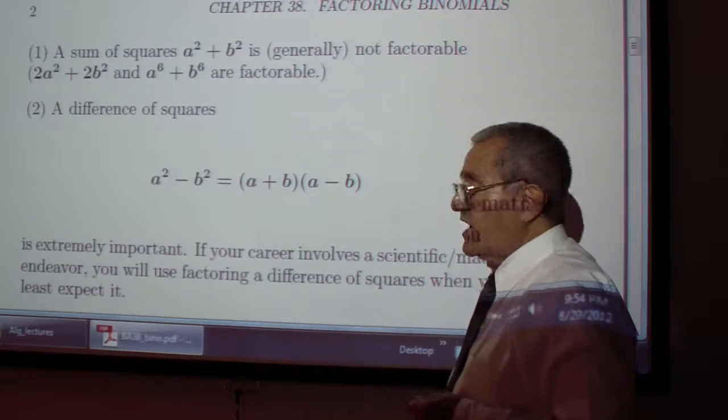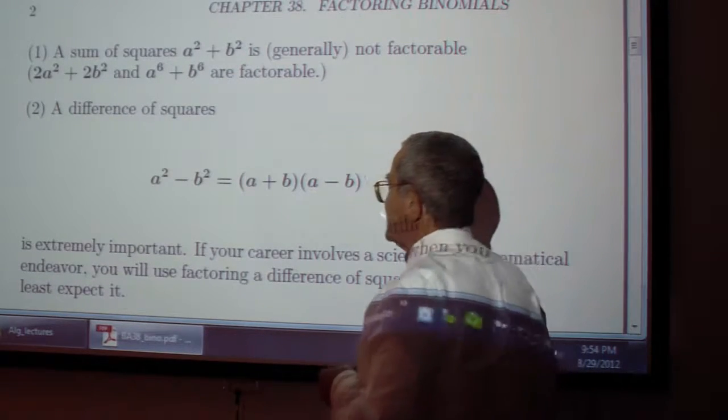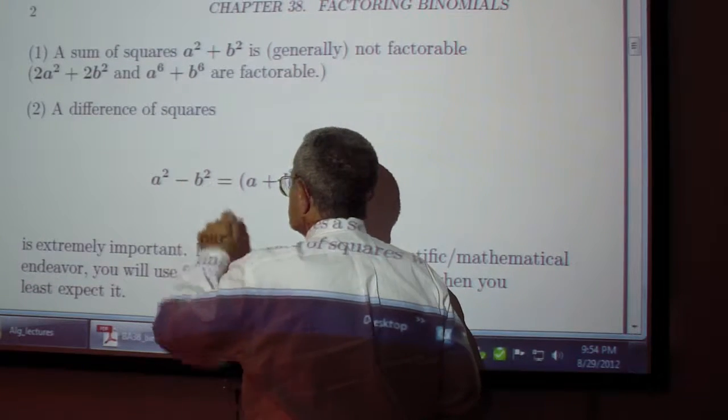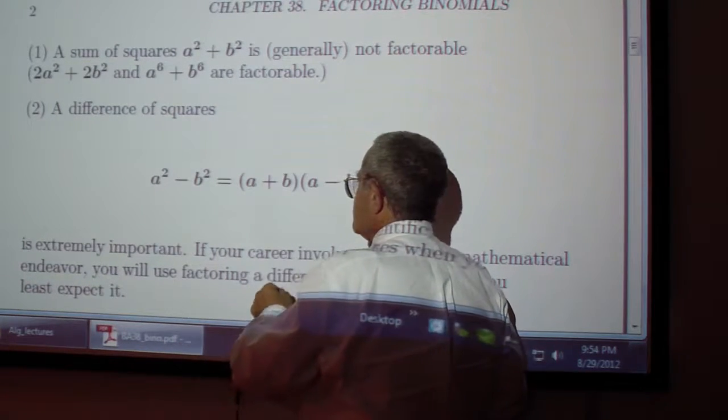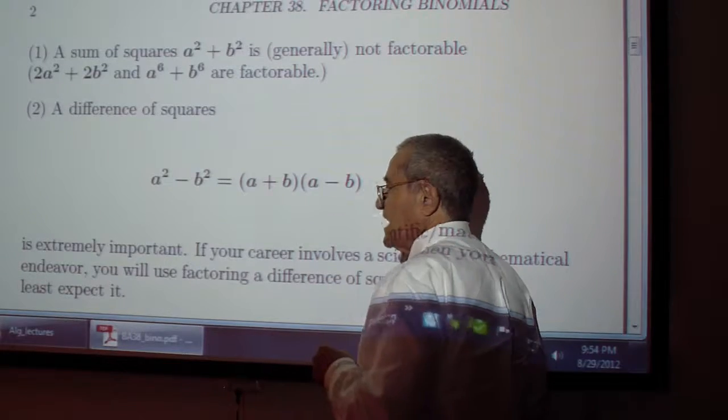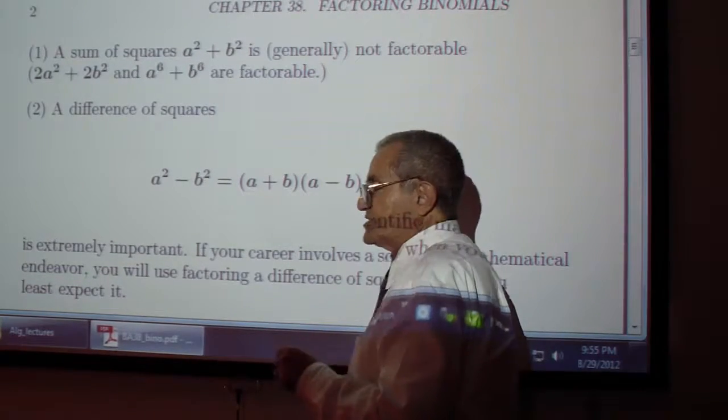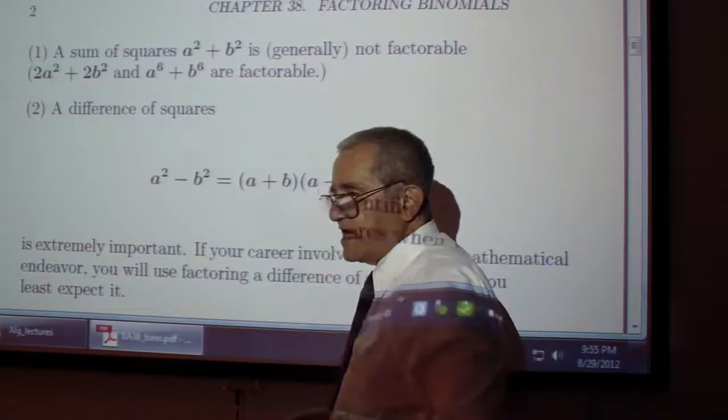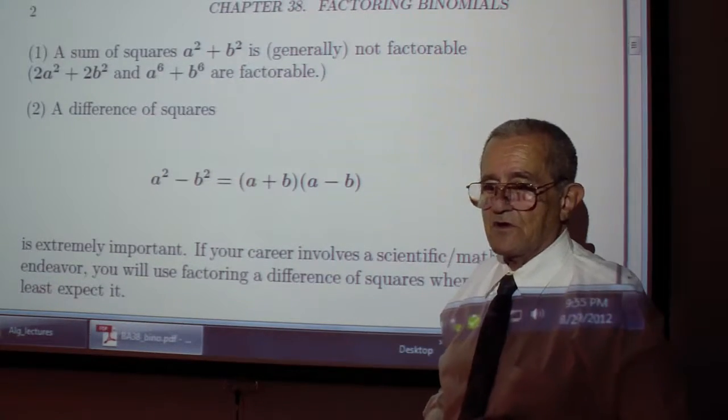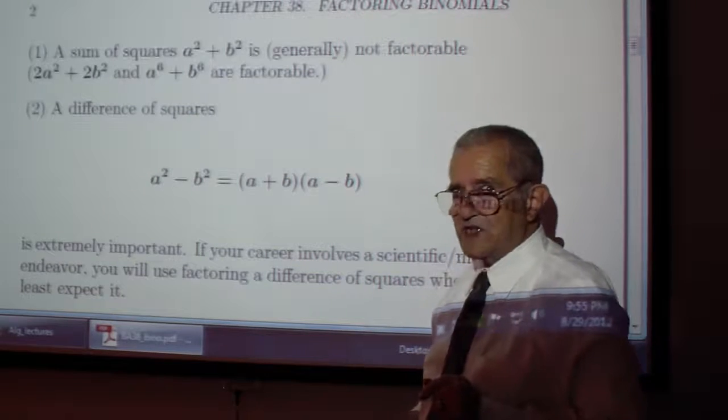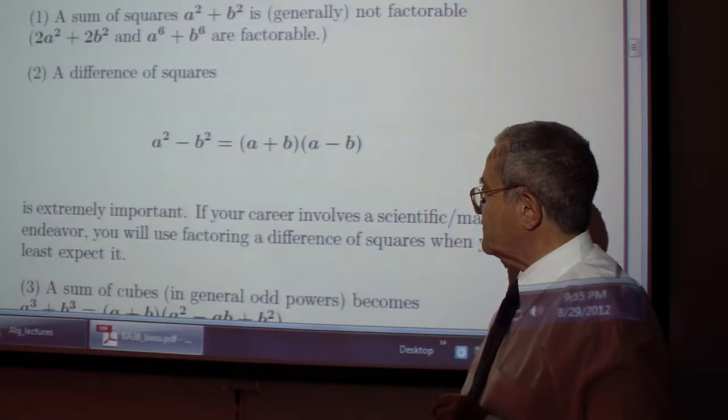A difference of two squares, a squared minus b squared, can be written as a plus b times a minus b. Remember, we developed it this way, and I said memorize it the other way, because you are going to see it again. You are going to see it where you least expect it. You will see it very frequently.